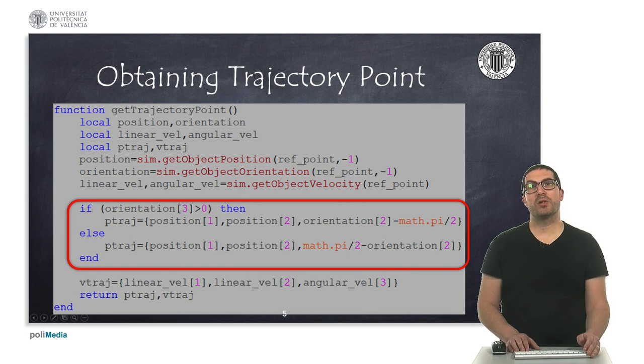Indeed, we can also implement the function as I show here, the get trajectory point function. The goal here is to access to the position and orientation and also the speed of the trajectory point. So, the position and orientation can be obtained with respect to any reference system. In this case, by introducing the number minus one, we're indicating that the position and orientation are with respect to the world reference system. On the other hand, the speed, the API that CoppeliaSim provides to obtain the speed of an object, it's always with respect to the world reference system. So, we don't need to introduce this second argument.